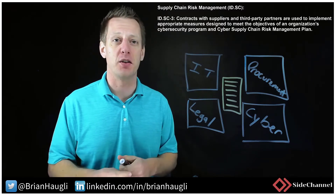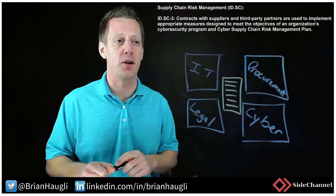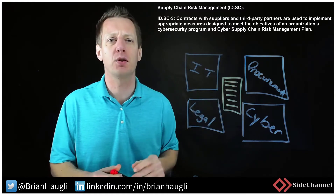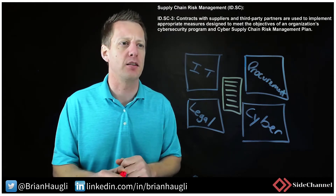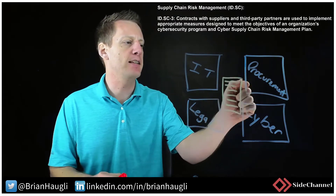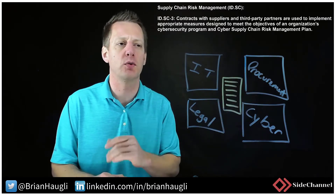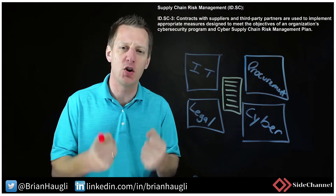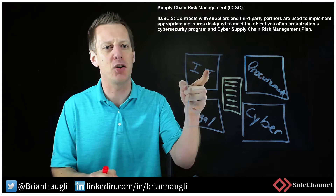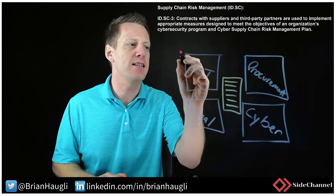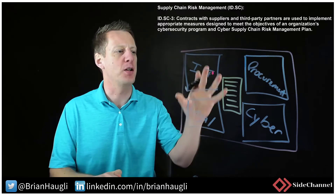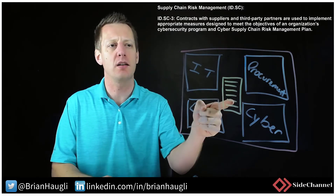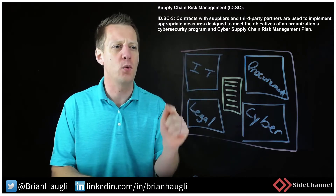Going back to the supply chain: the contracts that you have in place with any of your suppliers need to be the things used to implement the appropriate measures. This is traditionally handled by whoever is managing procurement. What is often overlooked is the type of relationship that should be established and consistently shepherded and nurtured between cybersecurity, legal, and your IT team with your procurement group. This team is going to be the most impactful, most effective, and the closest to the contracts that can actually address risk with any suppliers or third-party partners.